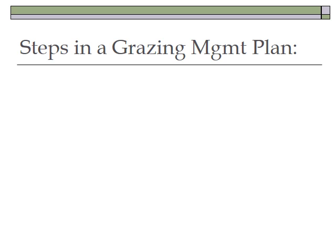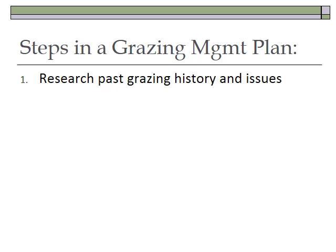Developing grazing methods is part of a grazing plan. The first step is to figure out what we already know about the system — research past grazing history and the issues landowners have had. Many ranchers don't realize that if they're grazing federal lands, there's a whole file of information about every allotment: past grazing history, photos, and vegetation surveys. There's a lot known about almost every piece of land in terms of grazing history and issues.